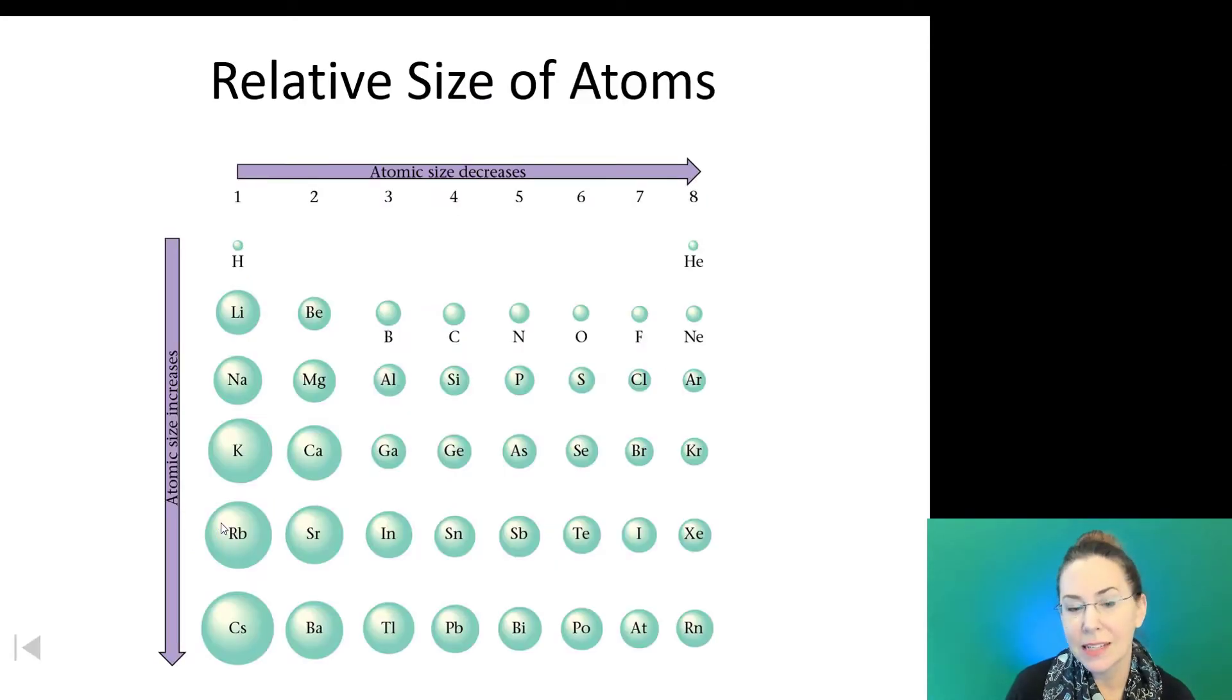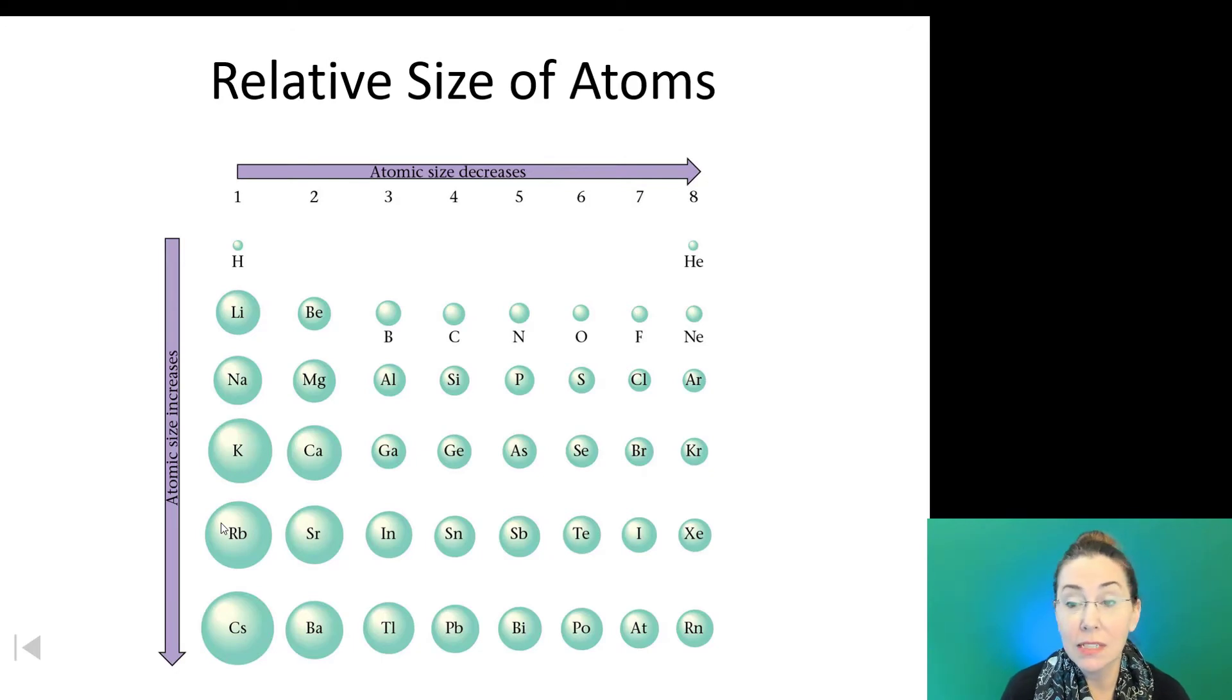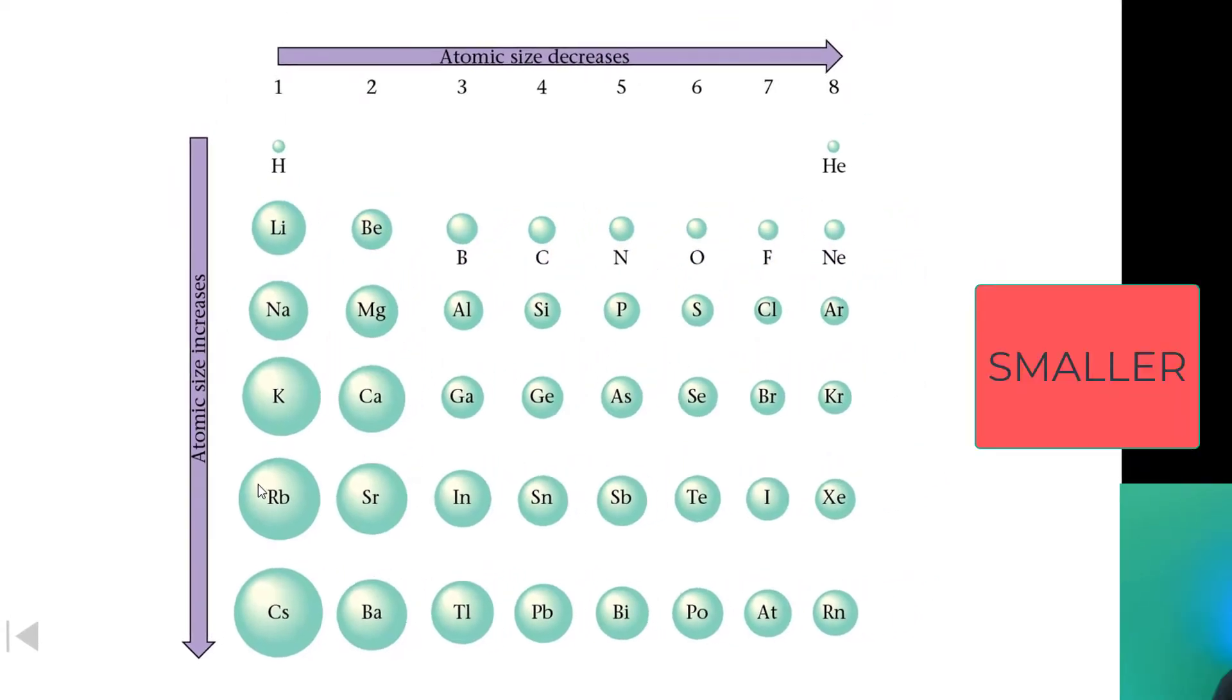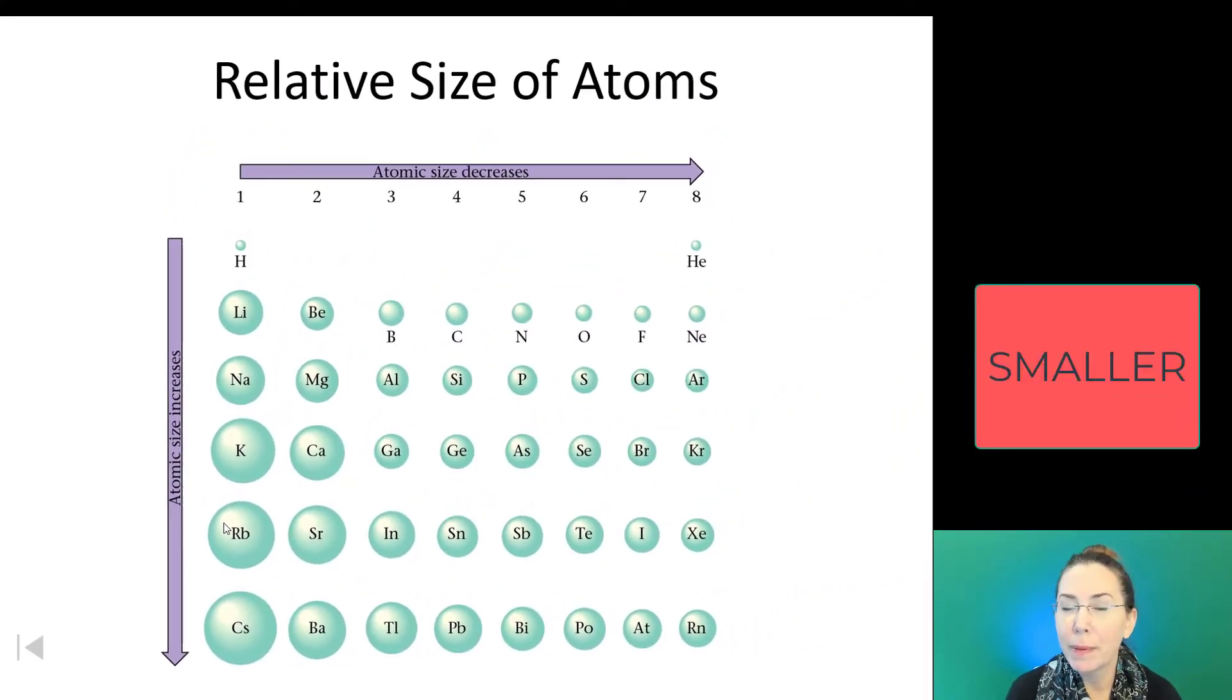So, this is a great diagram showing the relative size of atoms. If you look, helium and hydrogen are super tiny down in that 30 to 37 picometer range. But when we go to lithium, we're back up to 130. But as we move across the periodic table and we move from left to right, we see that we are becoming increasingly smaller. So, as we go from left to right across the periodic table, our elements are becoming smaller.